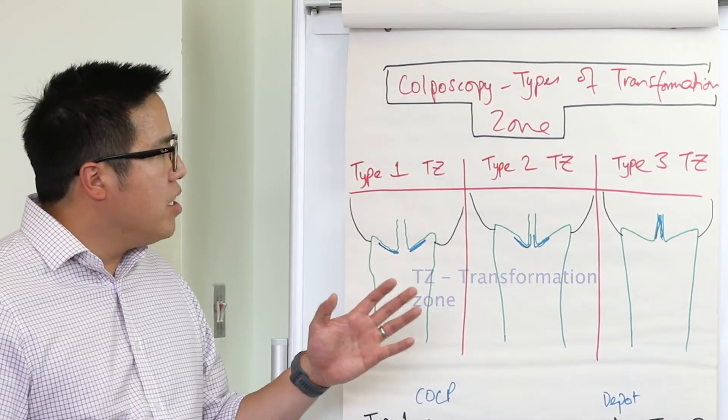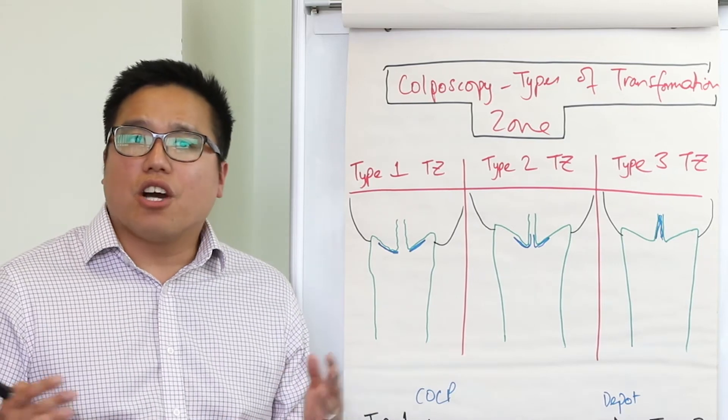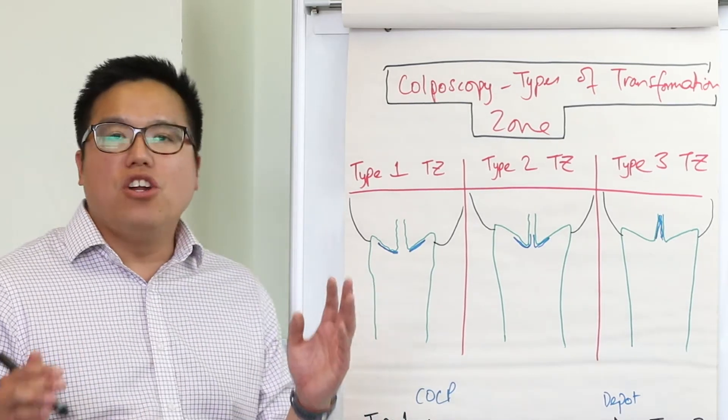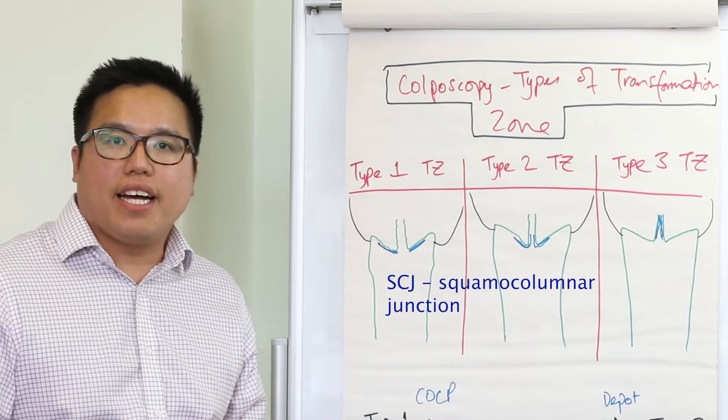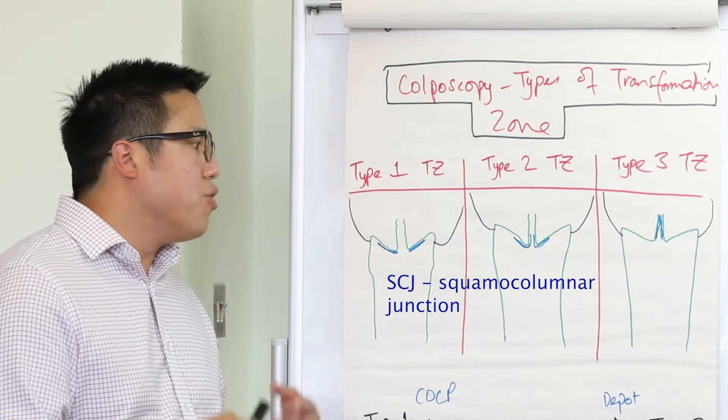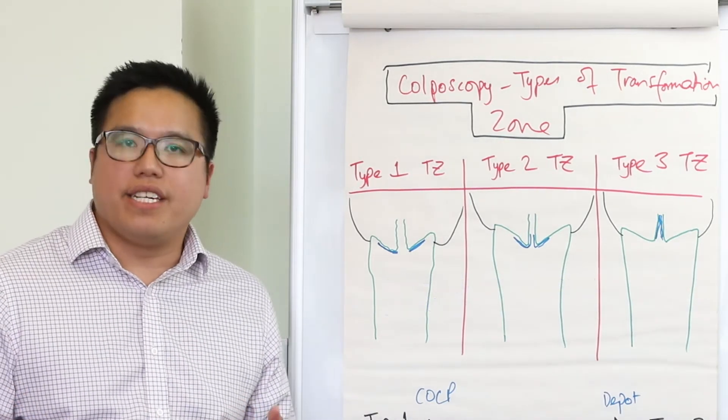Now a good thing about a type 1 transformation zone is that the colposcopist is going to find it really easy to have a look at that SCJ, that transformation zone, to apply that acetic acid and that iodine.